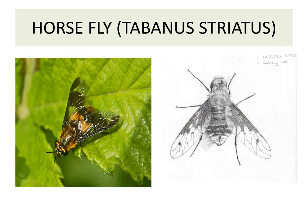Now, the structure of the horsefly: two wings, two are modified to halteres, three pairs of legs are there, and the eyes are broad.